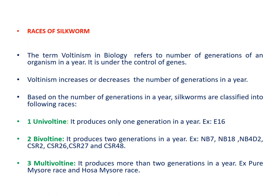The term voltinism in biology refers to the number of generations of an organism in a year. Voltinism is under the control of genes and is also influenced by light and temperature during embryonic development. Based on the number of generations per year, silkworms are classified into: Univoltine — one generation per year; Bivoltine — two generations per year, examples NB7, NB18, NB4D2, CSR2, CSR26, CSR27, CSR48; and Multivoltine — more than two generations per year, examples Pure Mysore race and Vosa Mysore race.